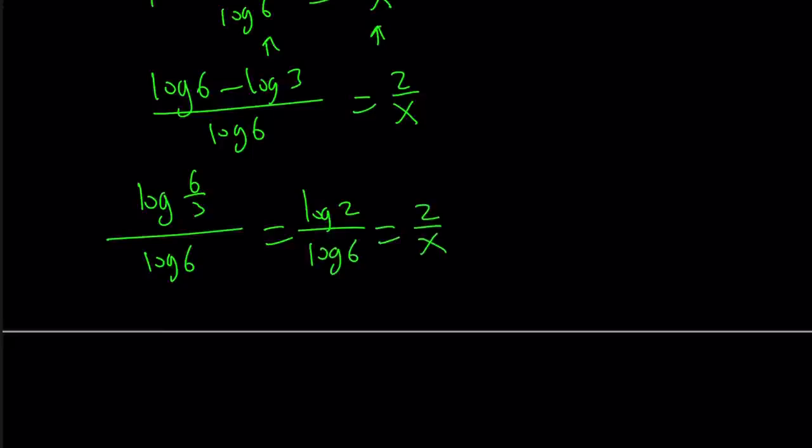And then from this point on, we can go ahead and flip both sides or cross-multiply. Either way is fine. So like log 2 times x equals 2 log 6.